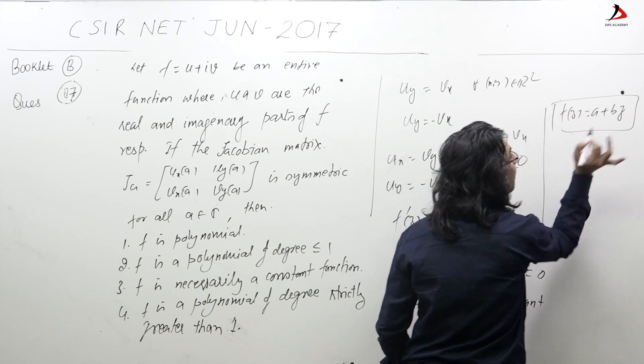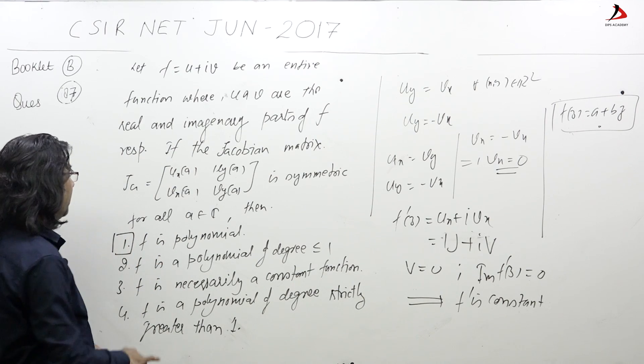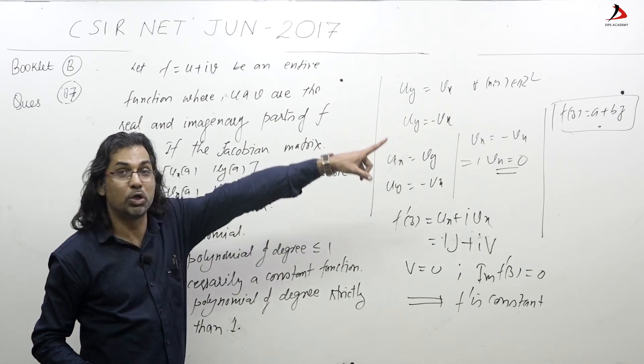So what are the answers on the basis of this? F is polynomial - correct. F is a polynomial of degree less than equal to 1 - correct.